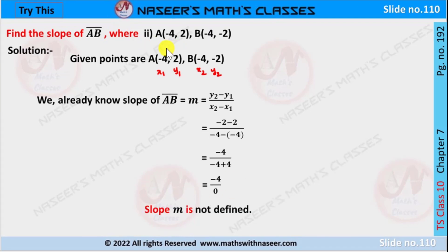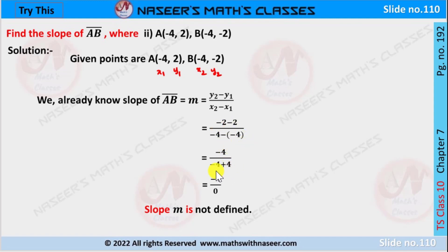The second part: A is (-4, 2) and B is (-4, -2). So x1 = -4, y1 = 2, x2 = -4, y2 = -2. The slope of AB is M = (y2 - y1) / (x2 - x1). Substituting: (-2 - 2) / (-4 - (-4)) = -4 / (-4 + 4) = -4 / 0. This is not defined because division by 0 is not possible. Therefore slope M is not defined.